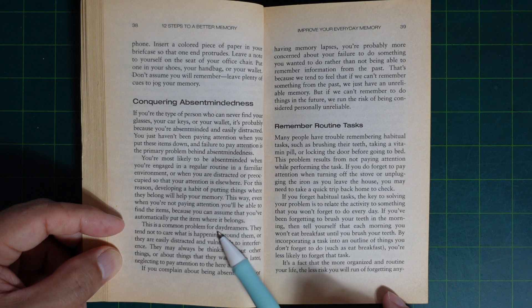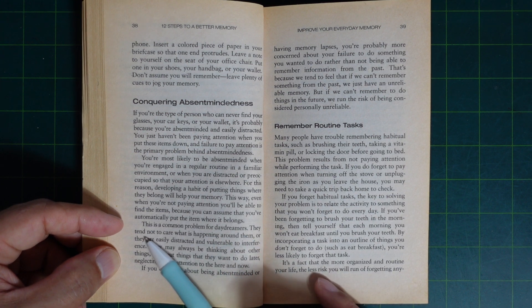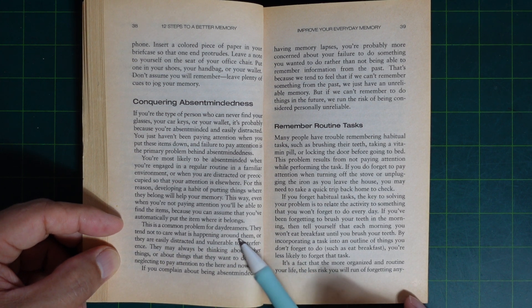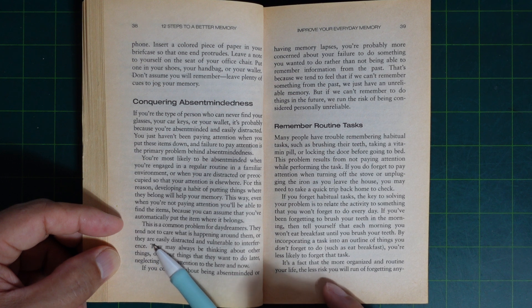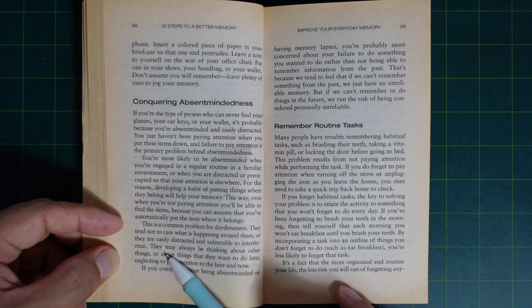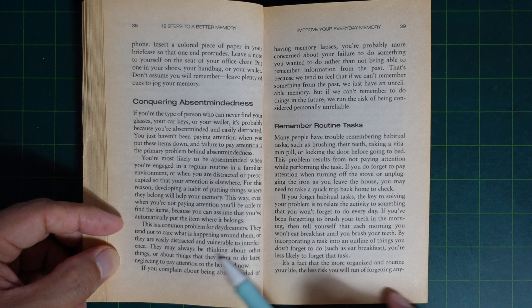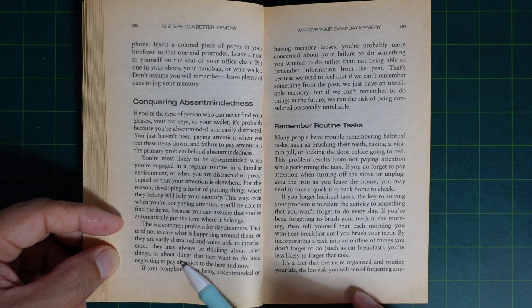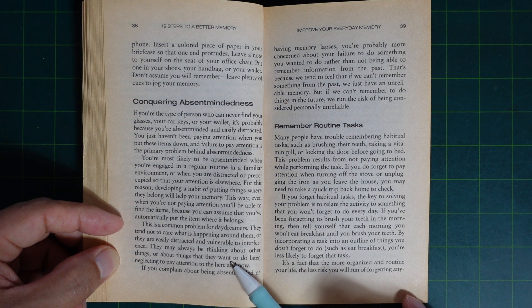This is a common problem of daydreamers. They tend not to care what's happening around them, or they are usually distracted and vulnerable to interference. They may always be thinking about things they want to do later.